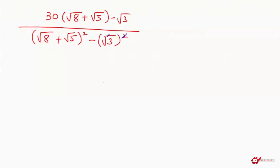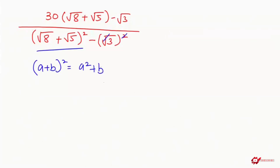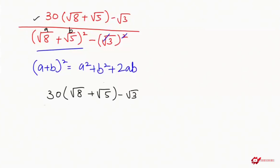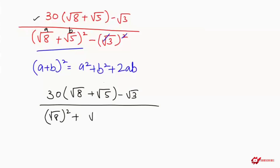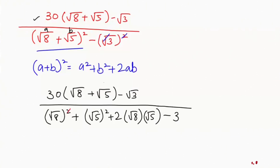Now here the conjugate terms get cancelled, and I am going to apply the algebraic identity: (a plus b) whole squared equals a squared plus b squared plus 2ab. Here this is our a and this is our b. So I write: 30 times (root 8 plus root 5 minus root 3) over root 8 squared plus root 5 squared plus 2 times root 8 times root 5, minus 3.